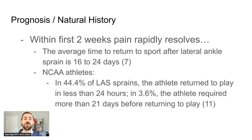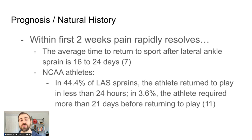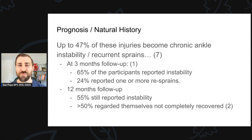What is the prognosis or natural history of lateral ankle sprains? Largely, these get better very quickly. Within the first two weeks, pain rapidly resolves in the large majority of individuals. The average time to return to sport is 16 to 24 days. In NCAA athletes, 44% returned to play in less than 24 hours, and only 3.6% required more than 21 days — meaning around 96% of folks get back before three weeks.